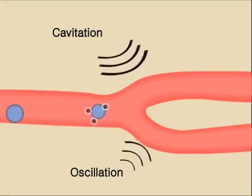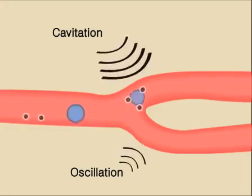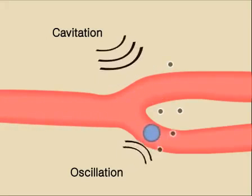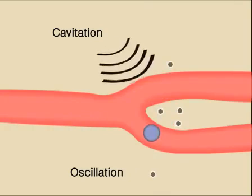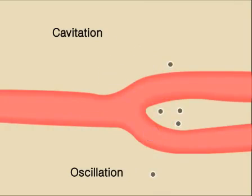The subsequent delivery from the circulation to a target organ occurs optimally through acoustic cavitation at a resonant frequency of the microbubbles. It seems likely that the mechanical energy generated by the microbubble destruction results in transient pore formation in or between the endothelial cells of the microvasculature of the targeted region.